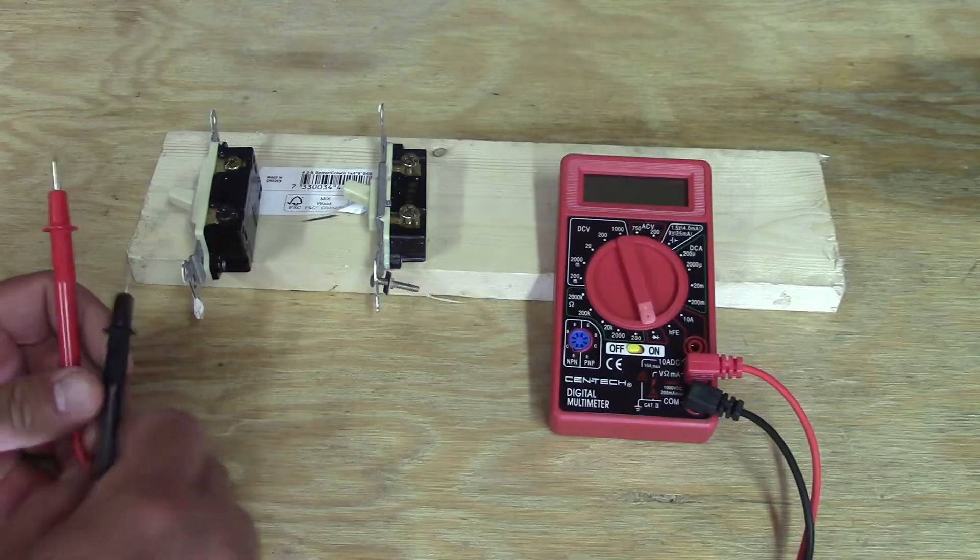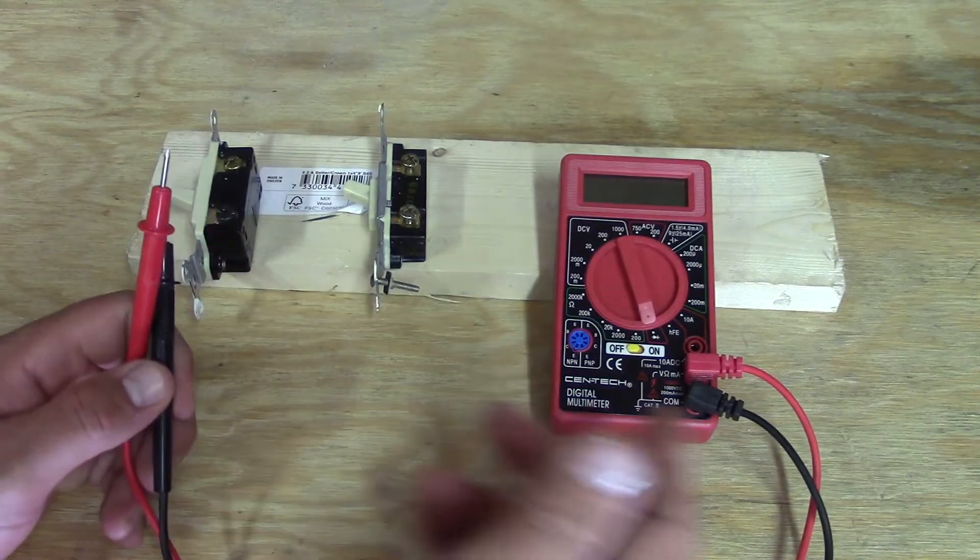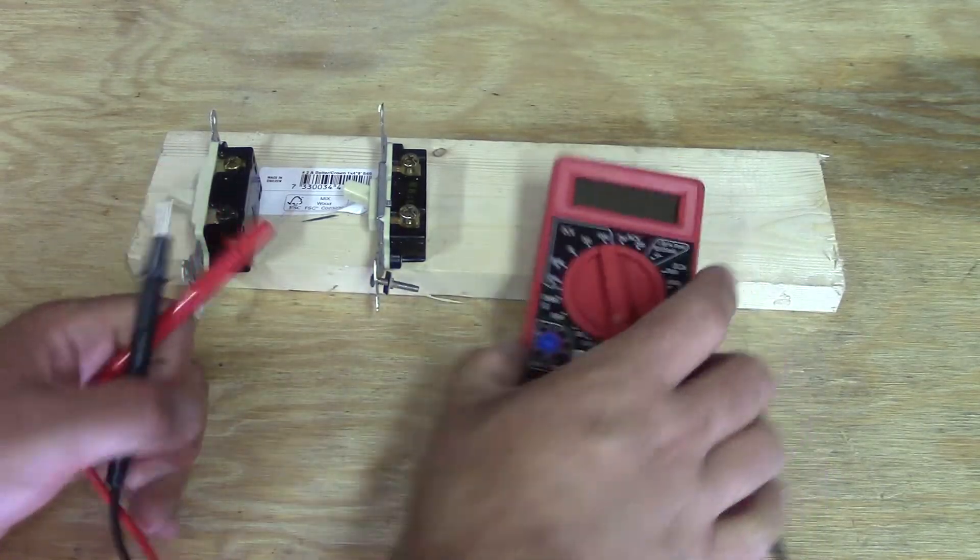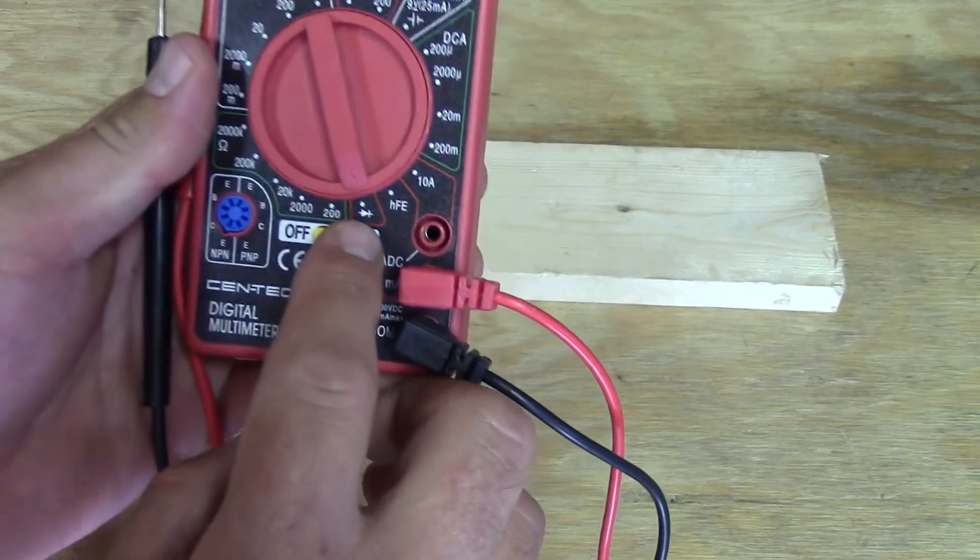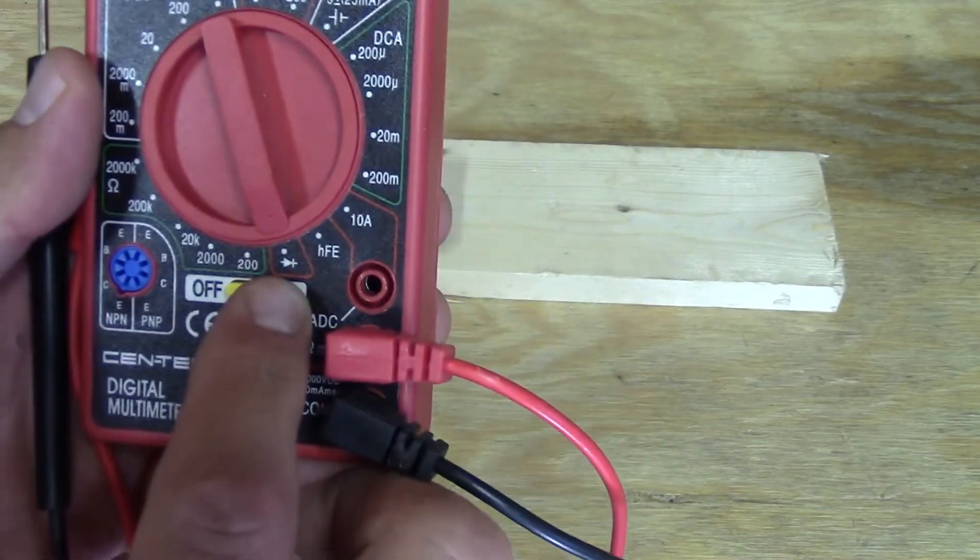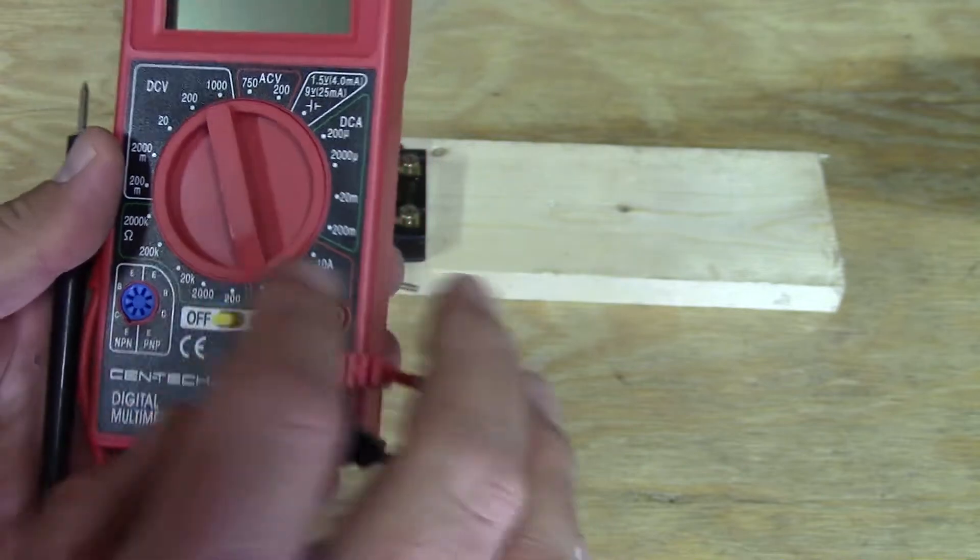Okay, so basically when you need to check a switch to see if the switch is working properly, you go to continuity on your meter and it'll always look like that. So you turn your meter to continuity.